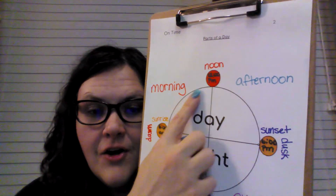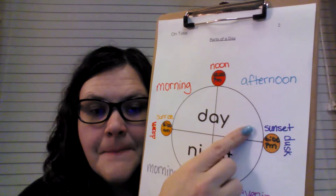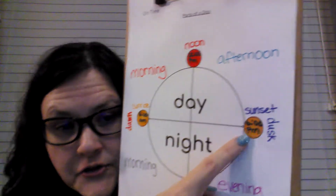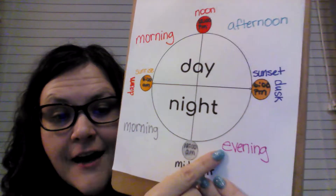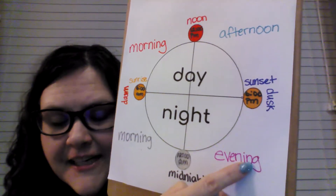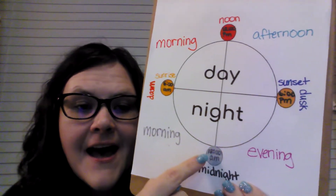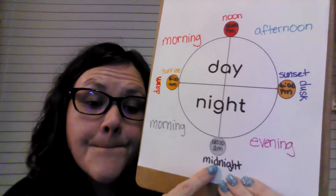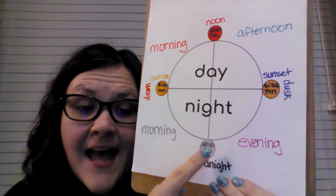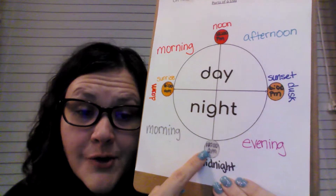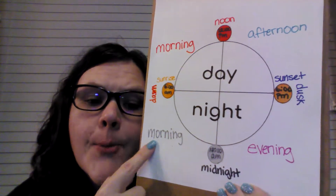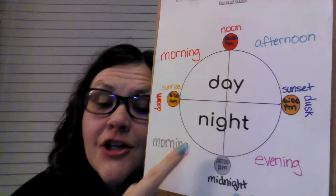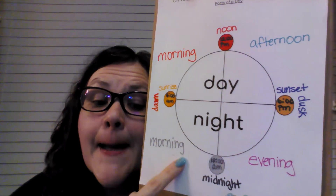We say dusk for this time. So that is all day. And then we start night. After dusk, we have evening. At 12 a.m., we say midnight. After 12 a.m., we say morning — even though it's night, we say morning.